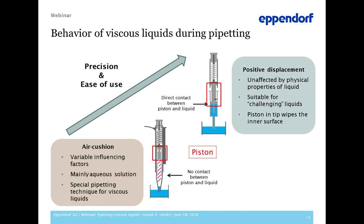Less problematic are positive displacement pipettes, also known as steppers or dispensers. Here, the liquid is soaked into a tip with an integrated piston — there is direct contact between the liquid and the piston, and there is no air cushion. This system allows the transfer of all liquids regardless of high density or high viscosity. Dispensers are more precise and accurate than air cushion pipettes with problematic liquids. The tip of a stepper or dispenser is filled once, and then the liquid is dispensed in multiple steps. A positive displacement pipette works on the same principle for single aspiration and dispensing of challenging liquids. Nevertheless, classic pipettes can be used with a special technique to facilitate working with viscous fluids.